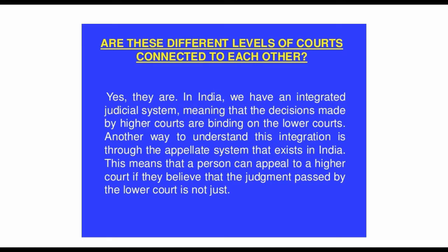Another point showing that these courts are connected is that the Supreme Court and High Courts act as courts of record. They maintain all previous records of cases, and their judgments are duly recorded and printed. The lower courts treat these judgments as laws. Thus in India there is one uniform judicial system, and all these courts at different levels are connected to each other.